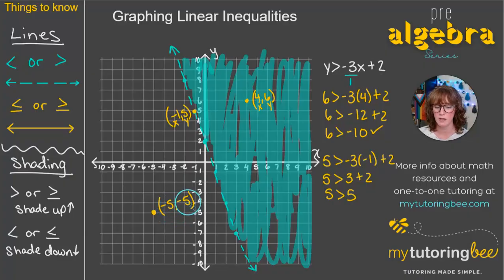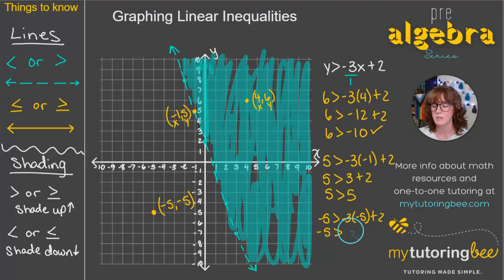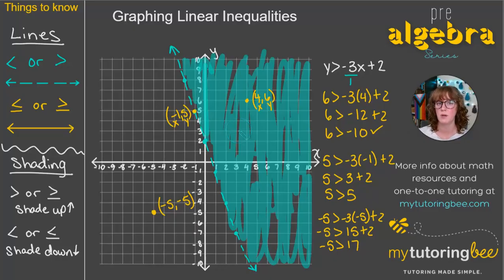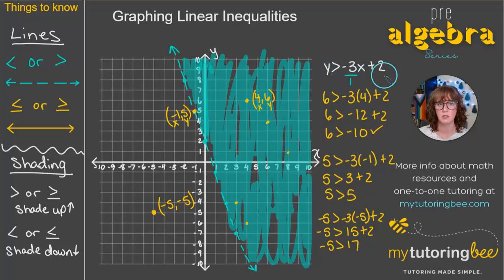For point (-5, -5): negative 5 is greater than negative 3 times negative 5 plus 2. Negative 3 times negative 5 is positive 15, plus 2 is 17. So negative 5 is greater than 17 — obviously not correct, which makes sense because this point is not in our solution set. The shaded region contains all points that are solutions to this inequality.